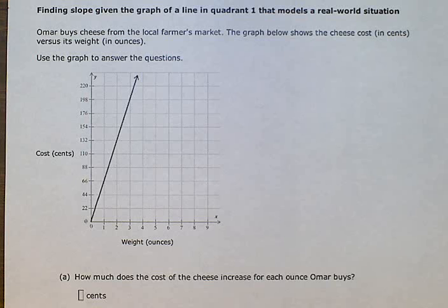Finding slope given the graph of a line in quadrant 1 that models a real-world situation. Omar buys cheese from the local farmer's market. The graph below shows the cheese cost in cents versus its weight in ounces. Use the graph to answer the questions.